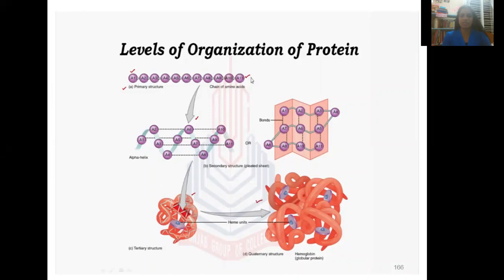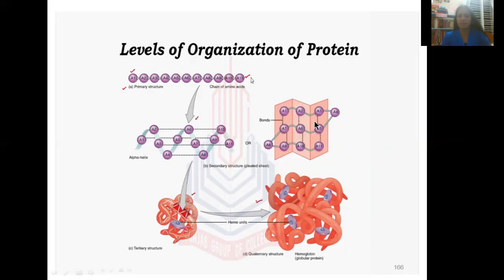To summarize the levels of organization of proteins: in the primary structure, you can see the linear polypeptide chain where each amino acid is joined by strong covalent peptide bonds. In the secondary structure, there are two main types: alpha helix and beta pleated sheets, though triple helix and beta bends also exist. The alpha helix is stabilized by hydrogen bonds, and hydrogen bonds also stabilize the native configuration of beta pleated sheets.